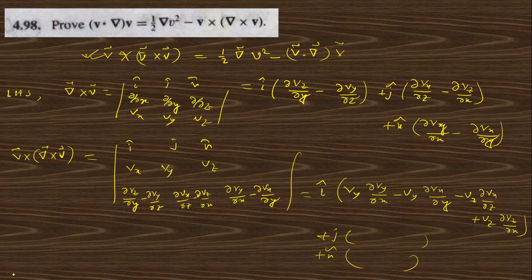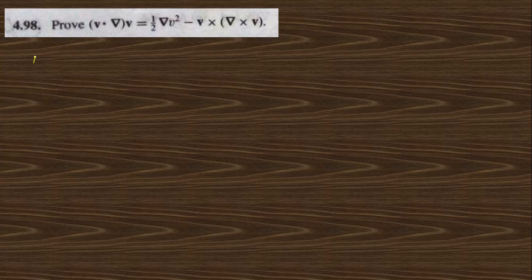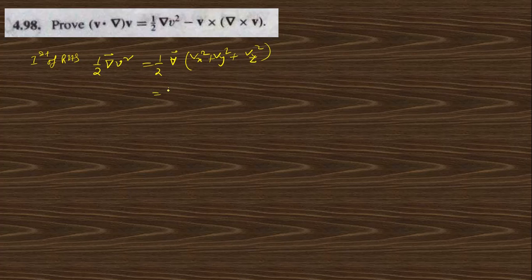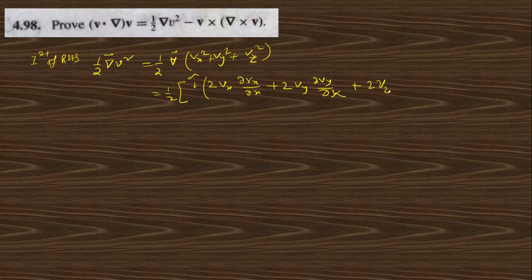For the first term on the right-hand side, half of grad V-squared: V-squared is Vx² plus Vy² plus Vz², so half grad of that gives I cap times half times (2Vx del Vx/del x plus 2Vy del Vy/del x plus 2Vz del Vz/del x), where the half and two cancel, and similarly for J cap and K cap.